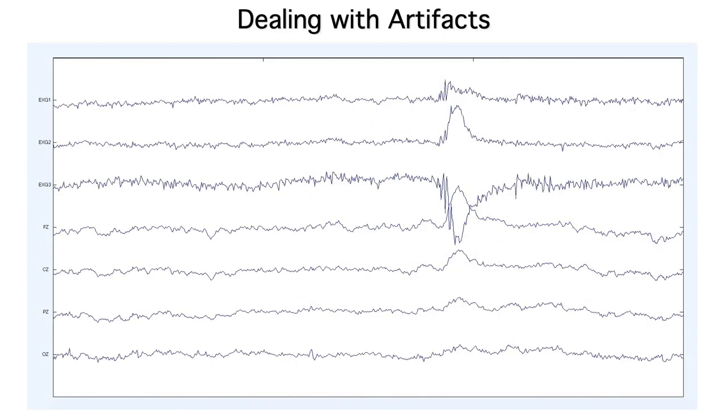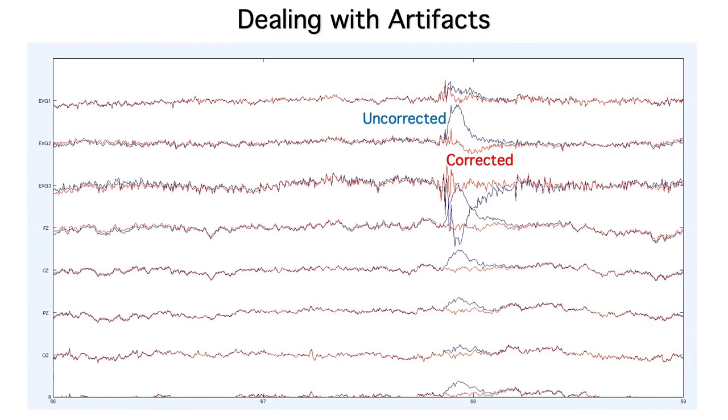Blinks are huge and easy to detect. And you can also correct for them using ICA. So most studies don't have differences in blink-related activity between conditions or between groups.